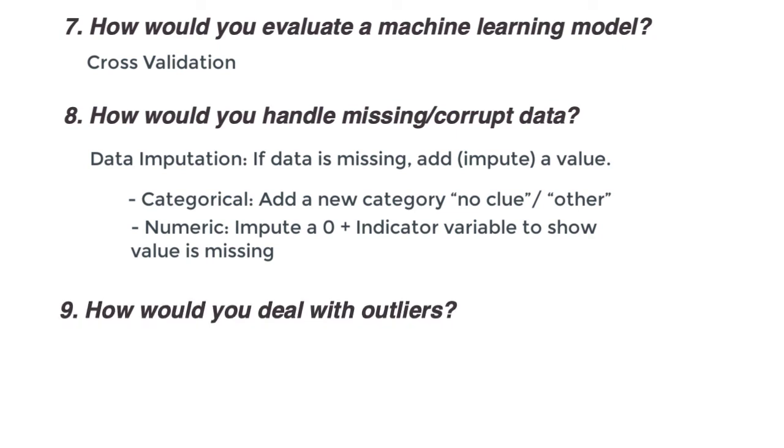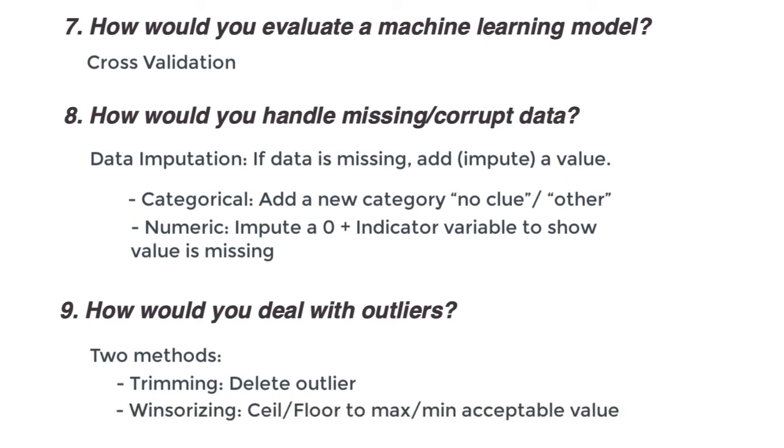How would you deal with outliers? Analyze the data with and without outliers. We don't know if removing them is going to have some adverse effect after all. That said, there are two methods of dealing with outliers. One is trimming, where we delete the outlier altogether. And the other is winsorizing, where we ceil or floor the value to the closest, that is either the maximum or minimum, acceptable non-outlier value. This is usually the preferred technique.